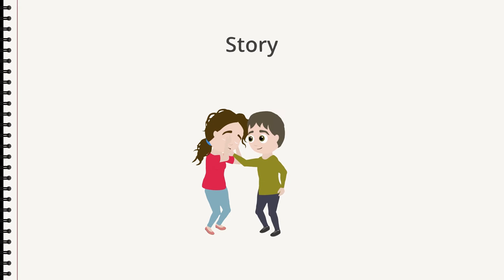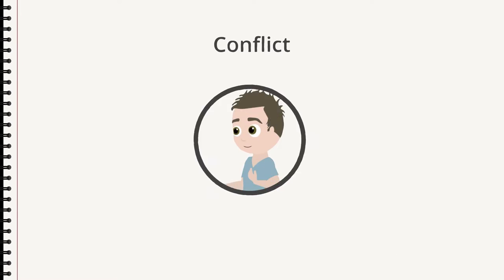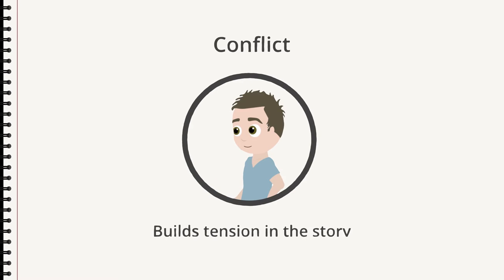In a story it is important to introduce a problem of some kind — a conflict. In this particular story, the conflict consists of Adam being deaf. Conflict is what builds the tension in the story.